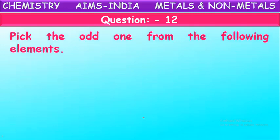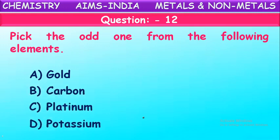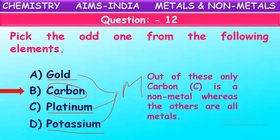Next question: Pick the odd one out from the following elements - gold, carbon, platinum, and potassium. The answer is carbon. Gold, platinum, and potassium are all metals, whereas carbon is a non-metal. That is the difference between the three options and carbon.